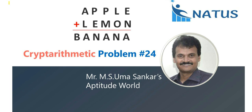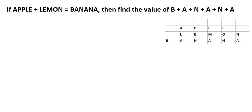Hello everyone, welcome to NETUS and Attitude World. This is the 24th problem of the Crypto Arithmetic video series. Apple plus lemon is equal to banana. Find the value of the sum of BANANA — B, A, N, A, N, A.